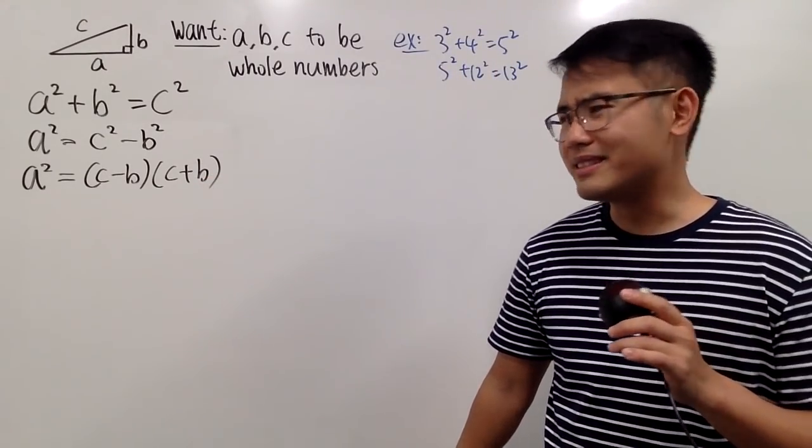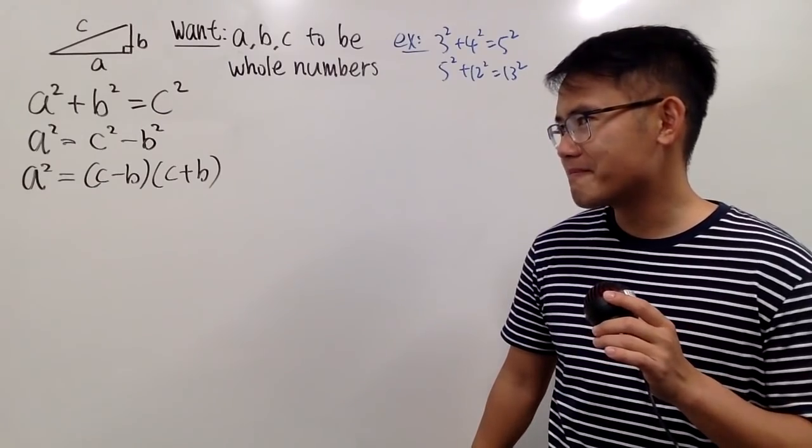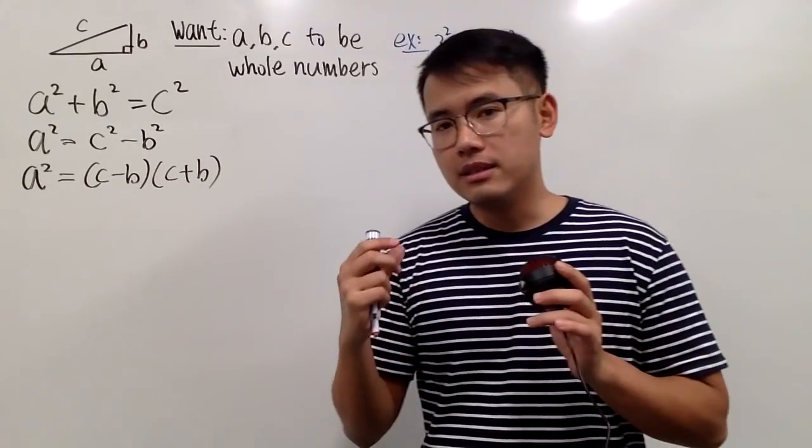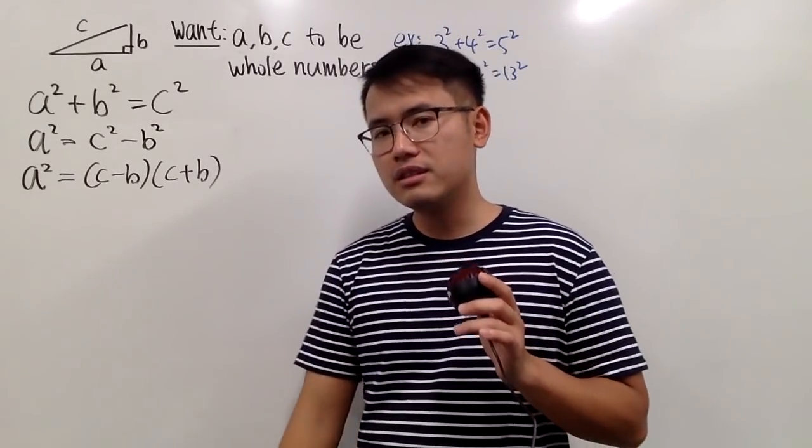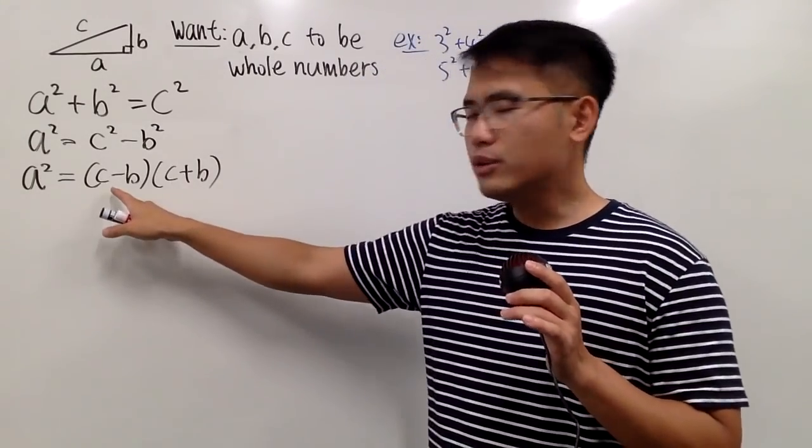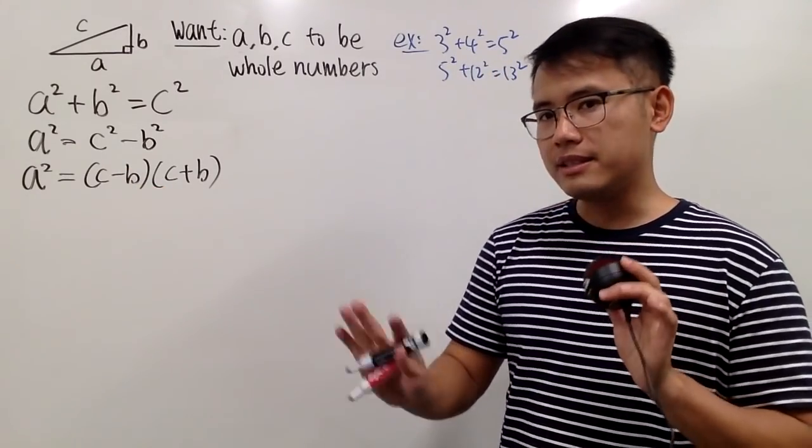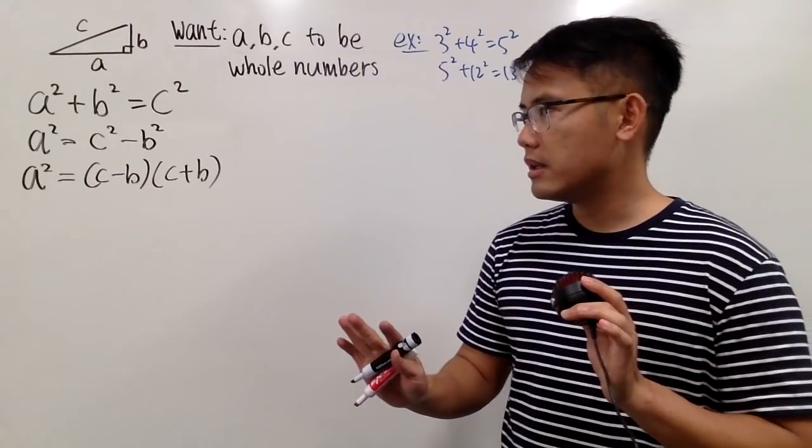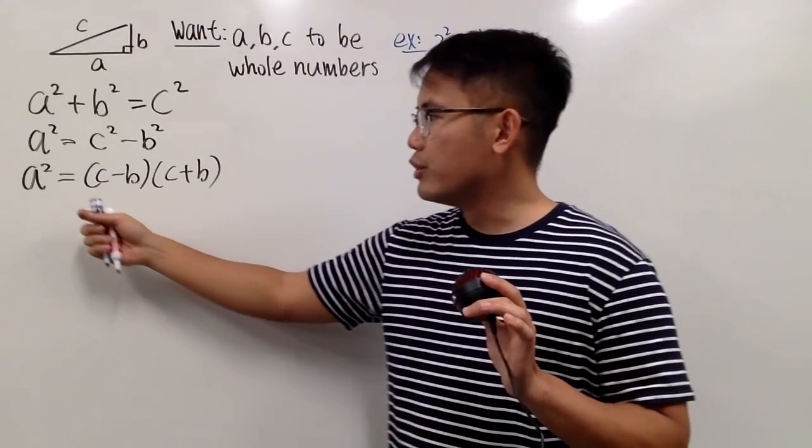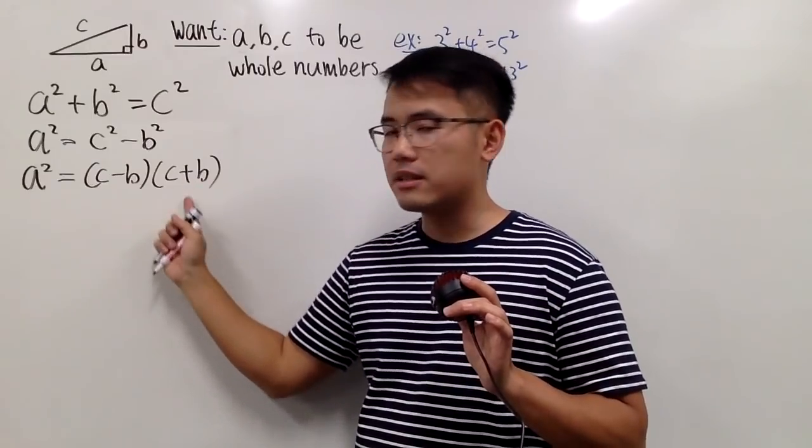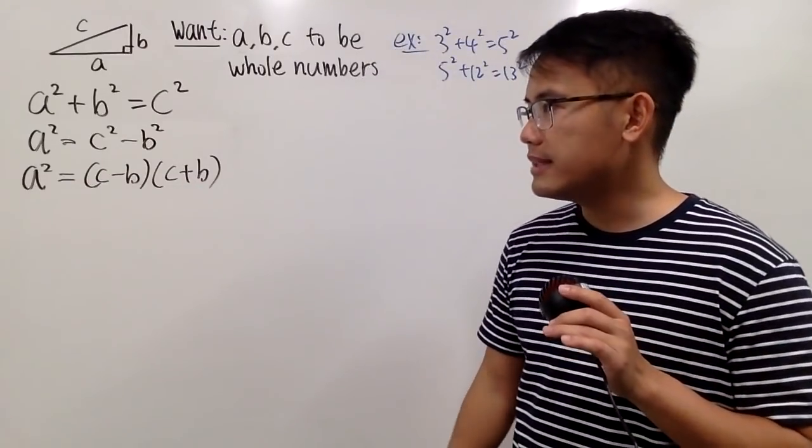And now the question is, so what? Well, A squared is, you know, A times A, so it has two factors. The right-hand side also has two factors. Let's try to balance things out a little bit. What I mean by that is, I'm actually going to bring one of the A to the other side, and likewise, bring one of these factors to the other side. Balance things out, all right?